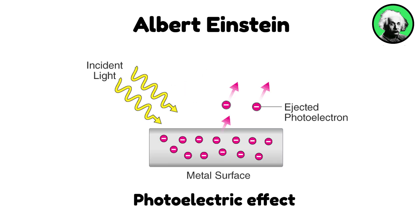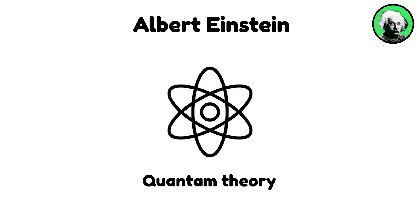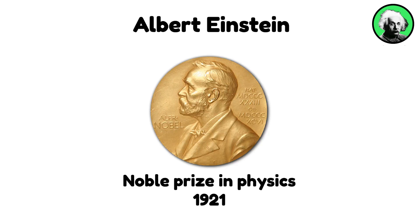Einstein proposed that light consists of particles called photons, explaining how light ejects electrons from metals. This work laid the foundation for quantum theory and earned him the Nobel Prize in Physics in 1921.